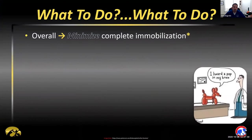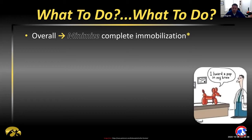In general for ligament injuries — not dislocations — try to minimize complete immobilization. There's a plethora of evidence that suggests complete immobilization can impact recovery, especially in the operative sense. It causes muscle atrophy and can affect neuromuscular control, which can delay recovery postoperatively. You certainly want to protect the injury, modify activities, and guard weight-bearing, but completely immobilizing the knee is not often in the patient's best interest with a ligament injury.